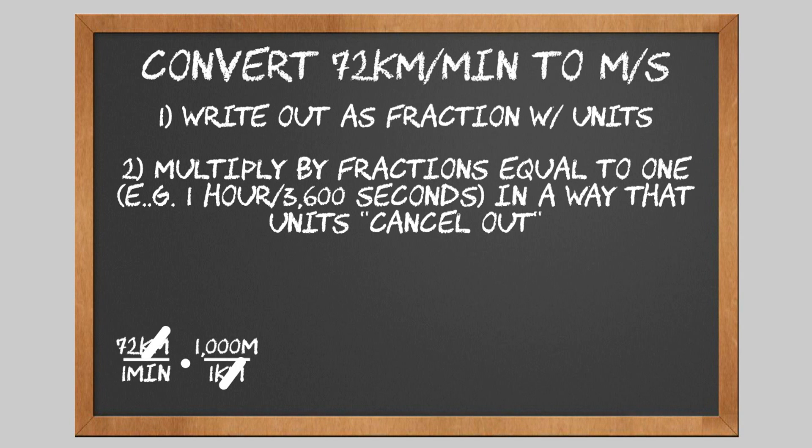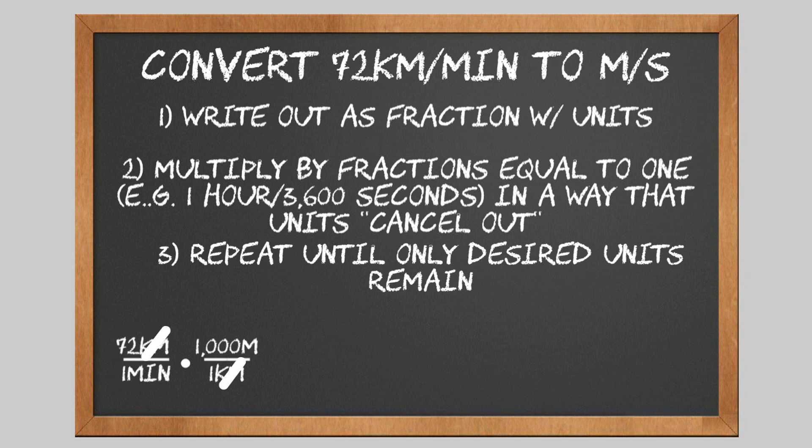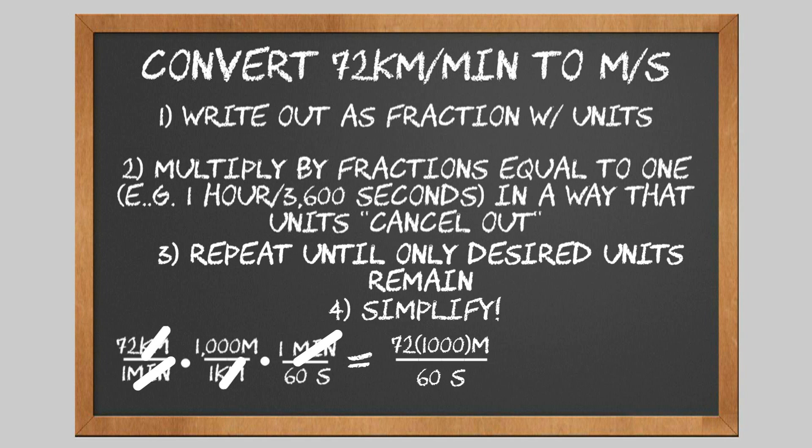Then we cross out the units that divide out and repeat the process until the only remaining units are the ones we're converting to. Then all that's left is to multiply all the numbers on the top and all the numbers on the bottom and divide those two answers. Conversions made easy.